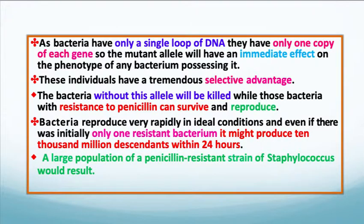As bacteria have only a single loop of DNA, they have only one copy of each gene, so the mutant allele will have an immediate effect on the phenotype of any bacterium possessing it. These individuals have a tremendous selective advantage because bacteria without this allele will be killed, while those with it can survive and reproduce. Bacteria reproduce very rapidly in ideal conditions, and even if there was initially only one resistant bacterium, it could produce 10,000 million descendants within 24 hours, resulting in a large population of a penicillin-resistant strain of staph infection.